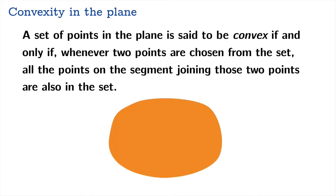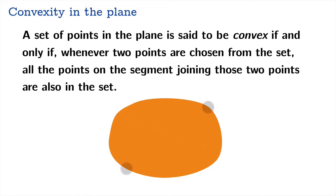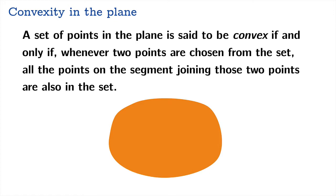Let's talk about convexity in the plane. A set of points in the plane is said to be convex if and only if, whenever two points are chosen from the set, all the points on the segment joining those two points are also in the set. So you pick any two points inside your shape, join them with a segment, and if that whole segment lies within the set, you can declare the set is convex.